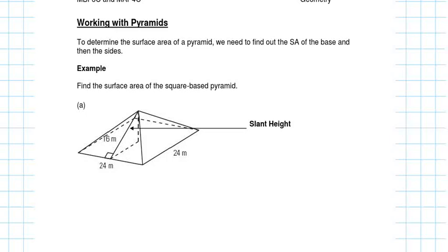To determine the surface area of a pyramid, we need to find the surface area of the base and the surface area of all four triangles. Since this is a square base, the area of the square base is length times width — and because it's the same side, that's B squared. They call it B on your formula sheet, so I'm going to stick with that.